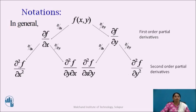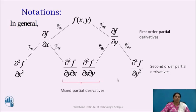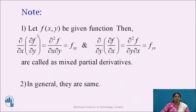These four derivatives are called the second order partial derivatives. And out of these four second order partial derivatives, ∂²f/∂y∂x and ∂²f/∂x∂y are called the mixed partial derivatives. Note that, in general, these two mixed partial derivatives are the same.